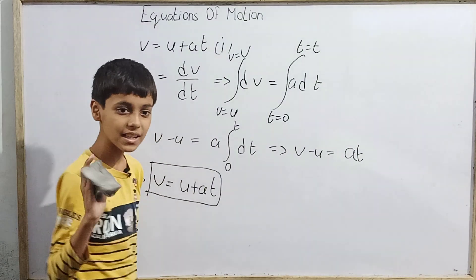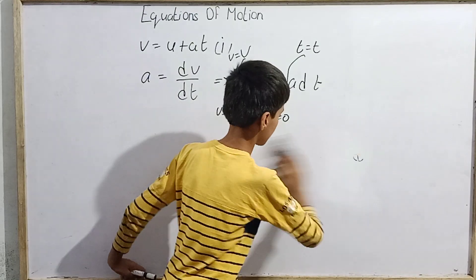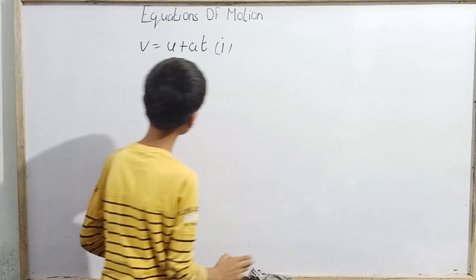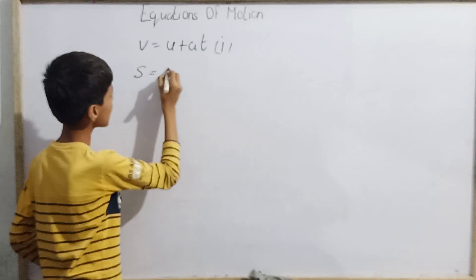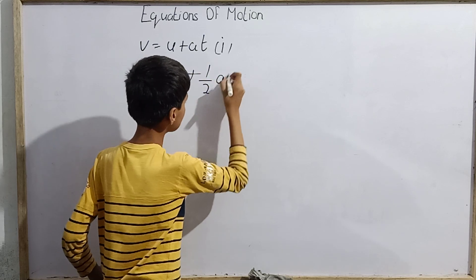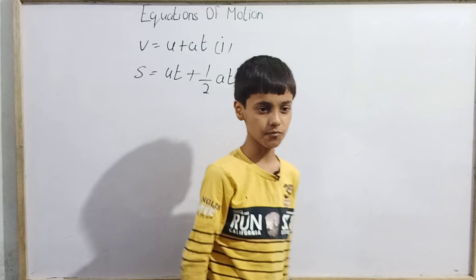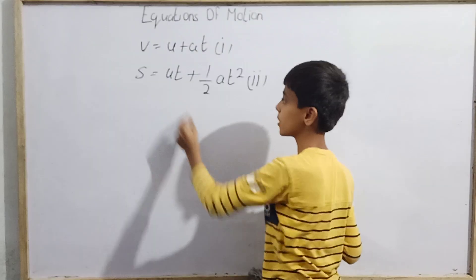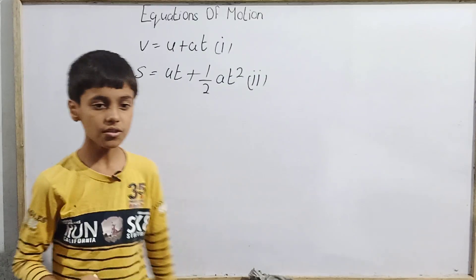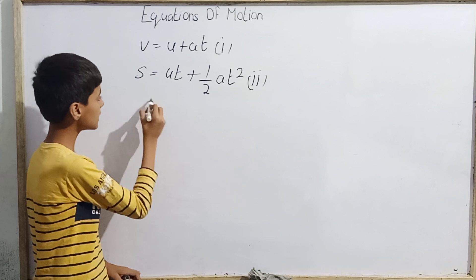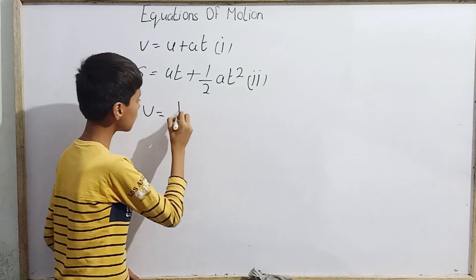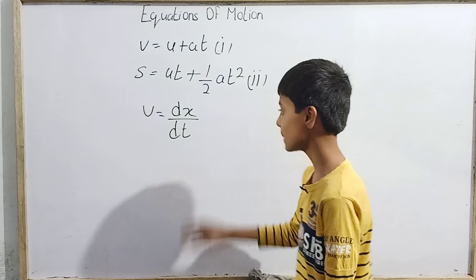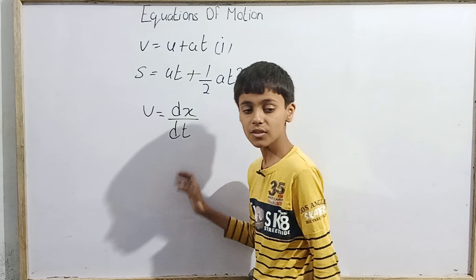Now let's move to the second equation of motion: s equals ut plus half at squared. This equation expresses the relationship between displacement, initial velocity, time, and acceleration. To derive it, we need the formula for instantaneous velocity, which is v equals dx by dt — not average velocity, but instantaneous velocity.